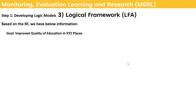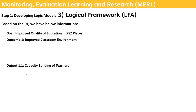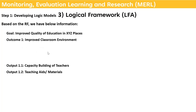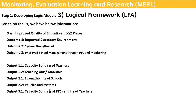Here we have the goal, three outcomes, and outputs. Under outcome one we have output 1.1 on capacity building and output 1.2 on teaching aids and materials. Under outcome two we have system strengthening — strengthening of schools, policies, and systems. Under outcome three, improved school management through PTC, we have outputs 3.1 and 3.2.